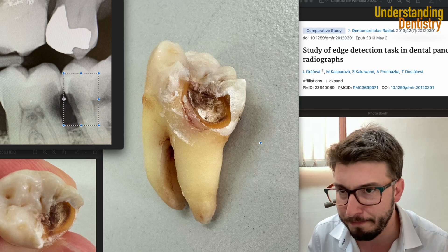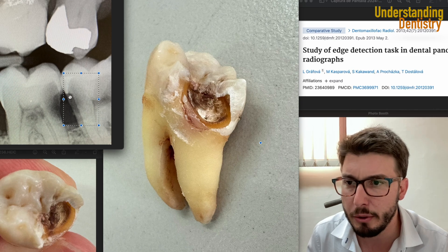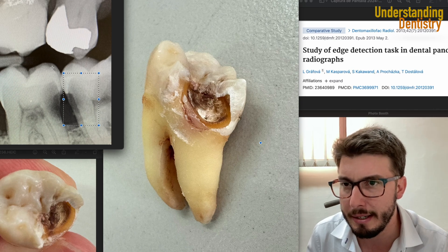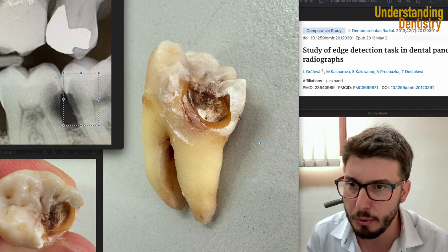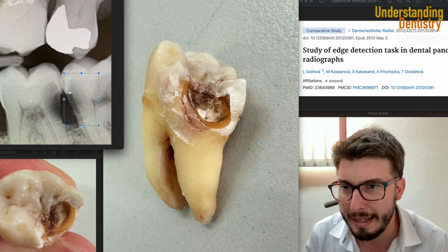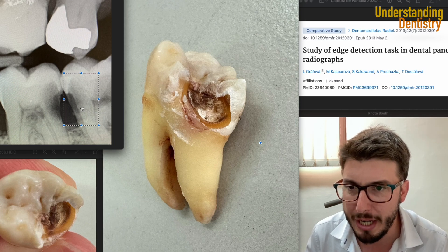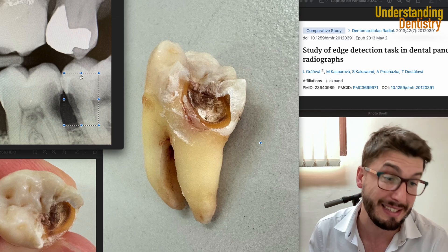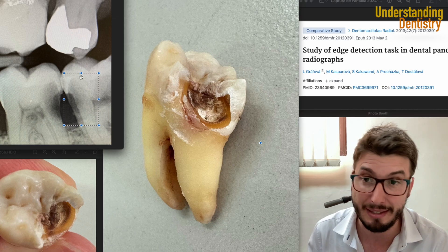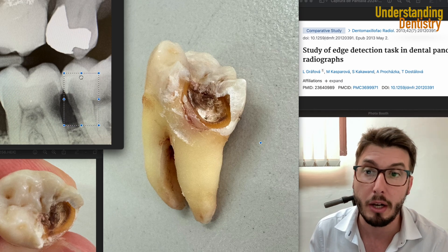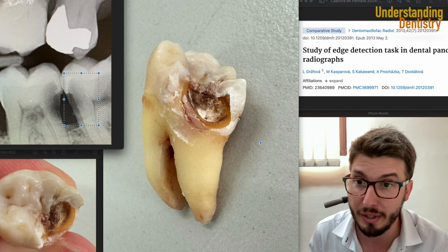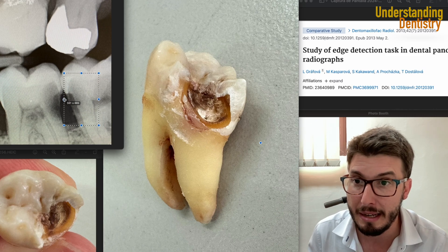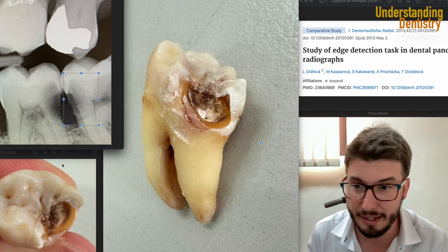So we have this caries here — the image is a little bit tilted on this radiograph. Is the caries already very close to the pulp chamber or not? Sometimes the radiograph underestimates the true loss of tooth tissue, and that's basically the bottom line here.